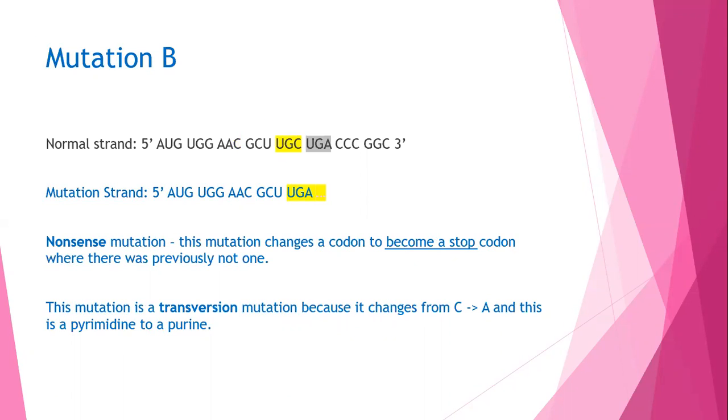In mutation B, the codon sequence UGC became UGA. This is an example of a nonsense mutation. It created a stop codon in the place of a normal codon. This mutation is also a transversion mutation.